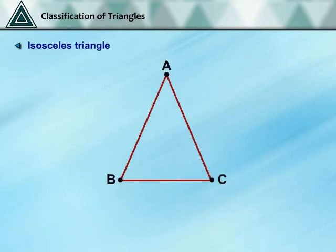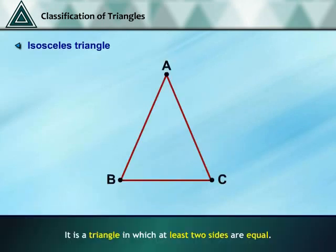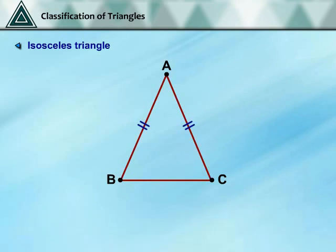Isosceles Triangle: a triangle in which at least two sides are equal is an Isosceles Triangle. In the given figure, ABC is an Isosceles Triangle as AB is equal to AC.